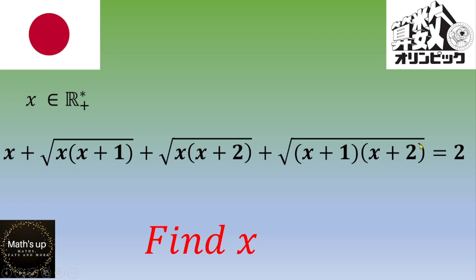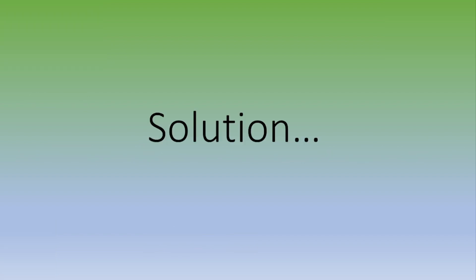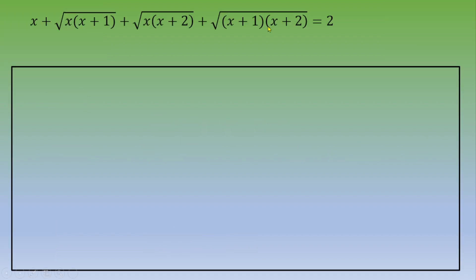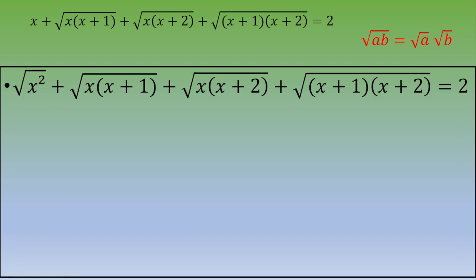If you want to give it a try, please pause the video. Otherwise, let's see the solution. One way to solve this is to transform the term x — the only term without a square root — by writing it as √(x²).